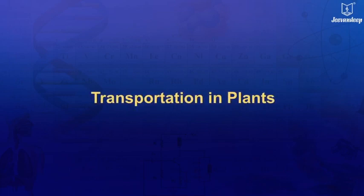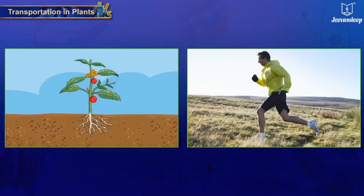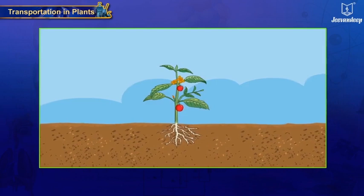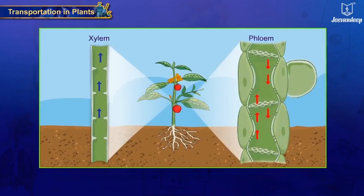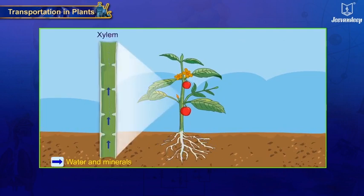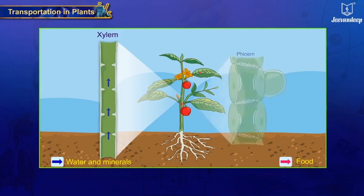Transportation in plants: as plants are stationary and perform fewer metabolic activities, their energy requirement is less, and hence the transportation system is less developed compared to human beings. Conducting tissues like xylem and phloem carry out transportation in plants. Water and minerals absorbed by root hairs are transported through xylem bundles, whereas food manufactured by leaves is translocated all over the plant with the help of phloem bundles.